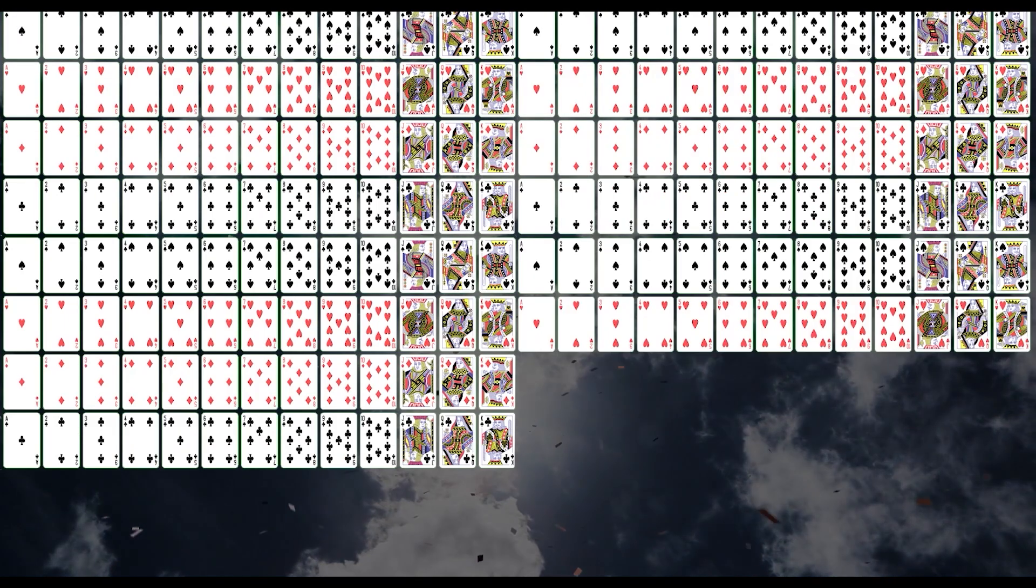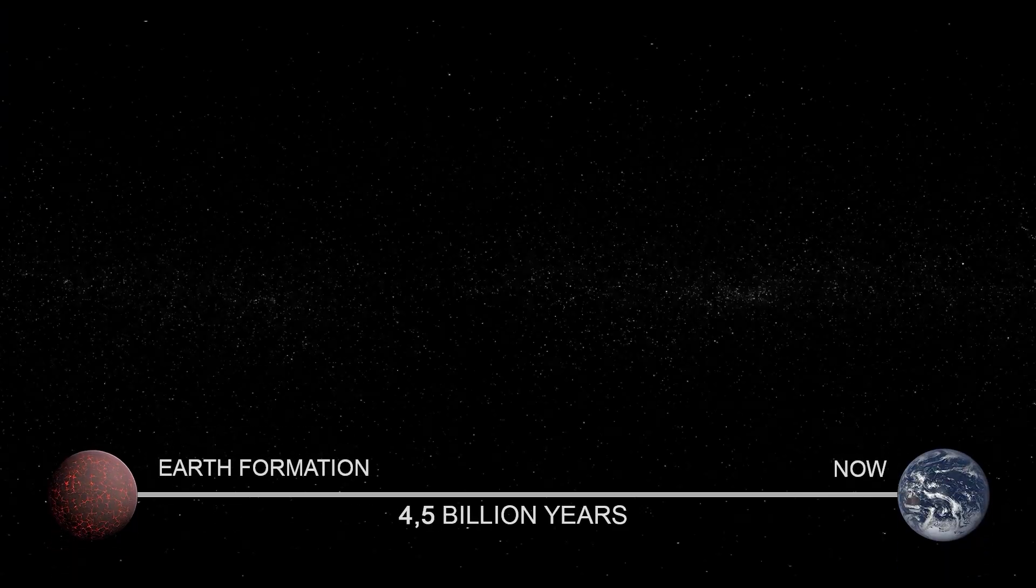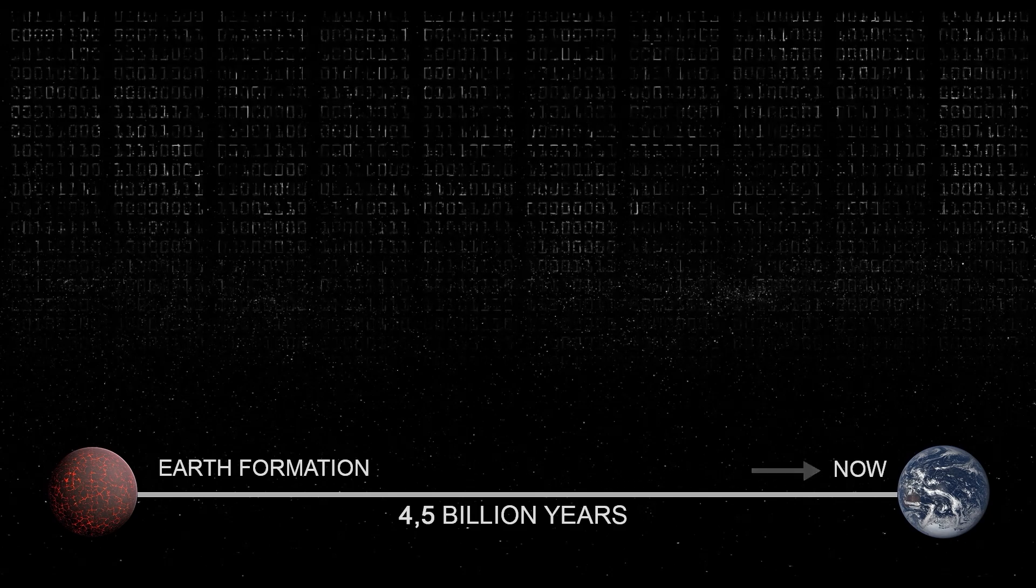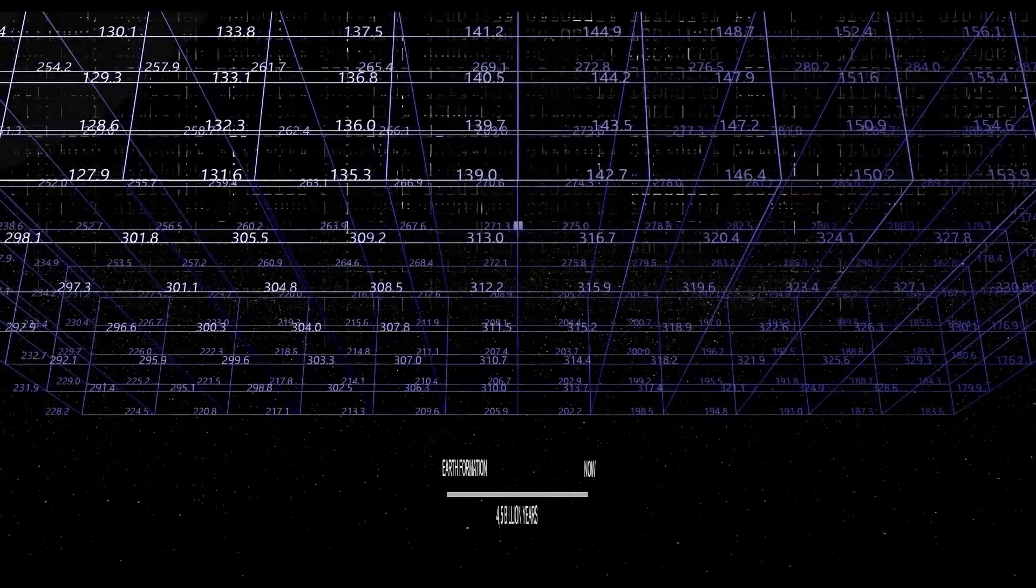It would be like throwing thousands of cards, expecting them to fall into specific sequences. Even if we started at the time of the Earth's formation, we would have the time to test only a tiny fraction of the possible combinations.